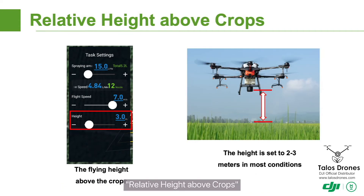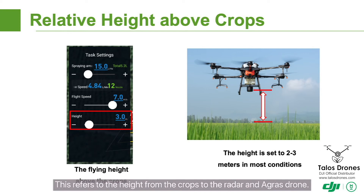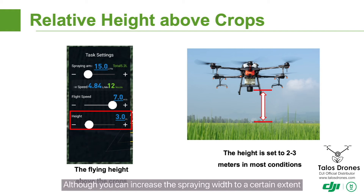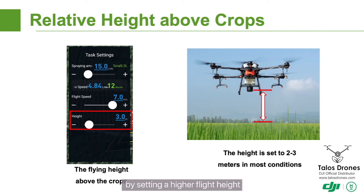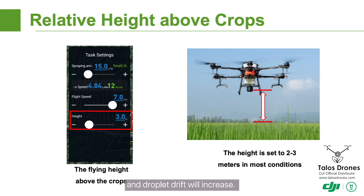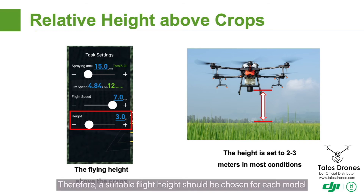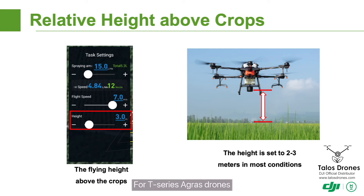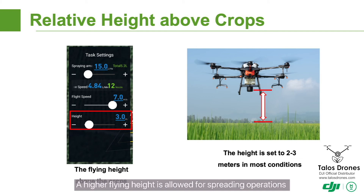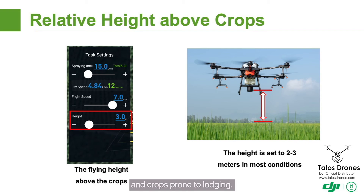Relative height above crops. This refers to the height from the crops to the radar and agrodrone. It determines the spraying width and the downward wind field. Although you can increase the spraying width to a certain extent by setting a higher flight height, the downward wind field of the droplets will decrease and droplet drift will increase. Therefore, a suitable flight height should be chosen for each model based on your actual needs. For T series agrodrones, a height of 2-3 meters is generally recommended. A higher flying height is allowed for spreading operations and crops prone to lodging.